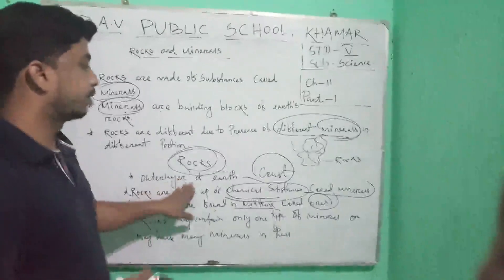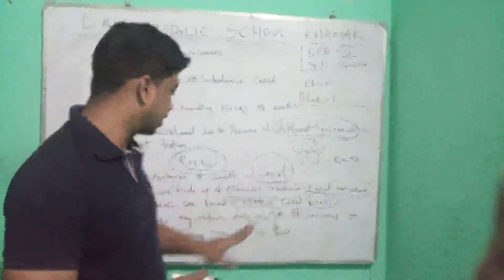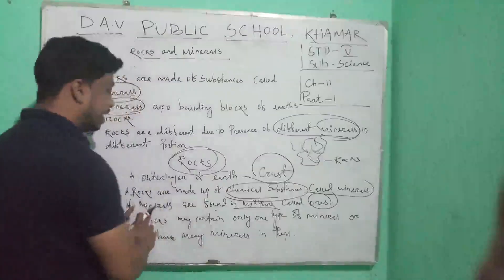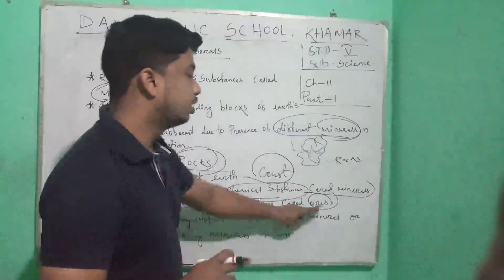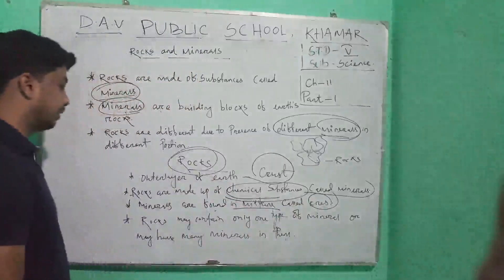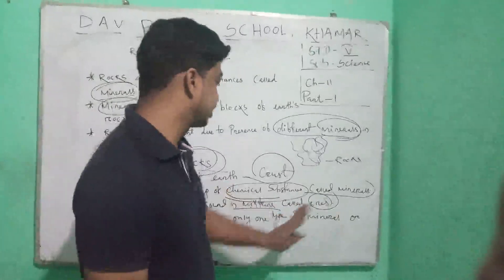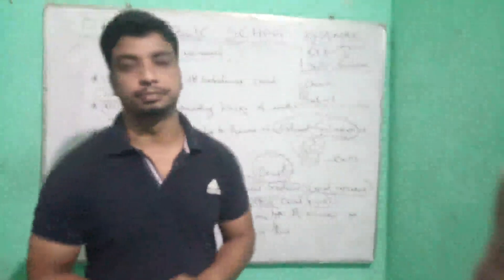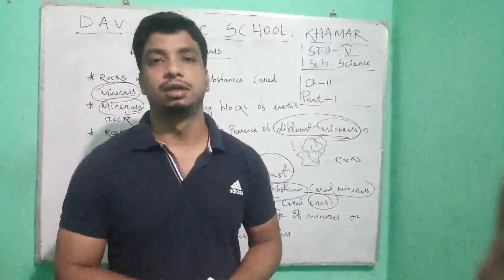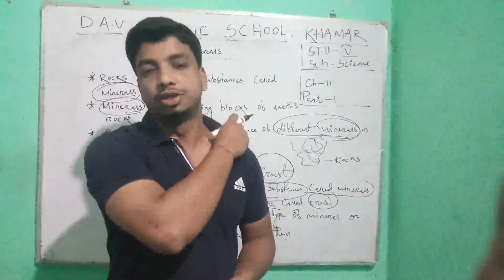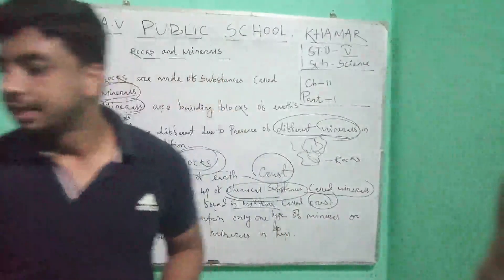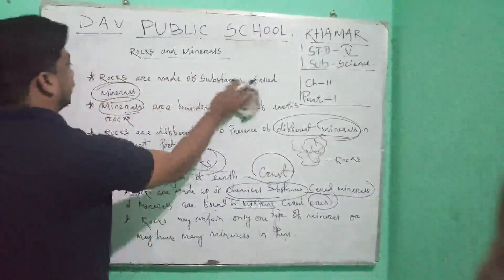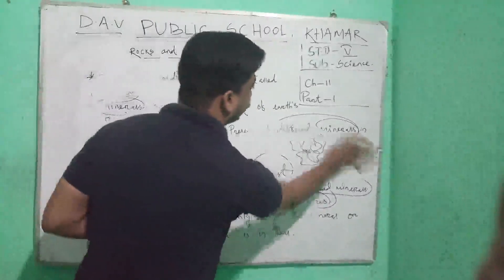So these are some important points about rocks: the outer layer is called the crust, rocks are made of chemical substances called minerals, minerals are found in mixtures called ore, and rocks may contain only one type or many types of minerals. Let's now know about the kinds of rocks.